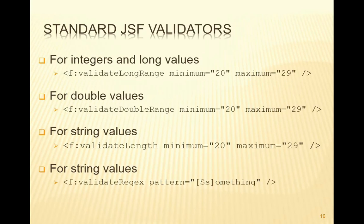Here are most of the standard validators. Validate long range will allow us to validate a long value for a given range, and minimum and maximum will specify the range. If the string typed into the input text box fits within that range then the validation passes. If it doesn't, there's a validation exception and, as we saw with the converter, we'll get some error messages. We can do that with double values as well. For strings we can validate the length, and also we could validate strings against a regular expression, and these all work in the same way.